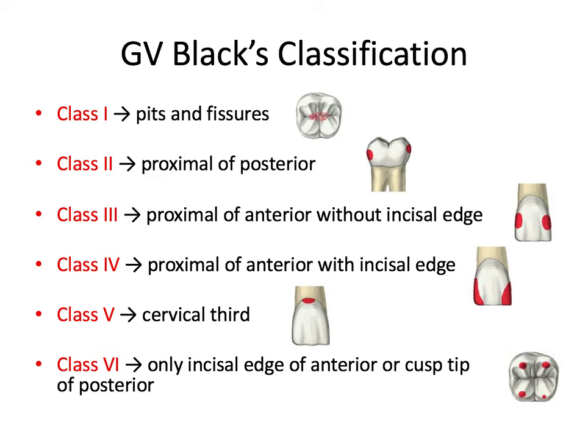Let's start with Class 1 decay, which involves the pits and fissures. This is going to be your occlusal surfaces of the premolars and molars, also the buccal or lingual pits of molars, and the lingual pits of upper incisors.